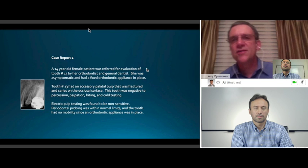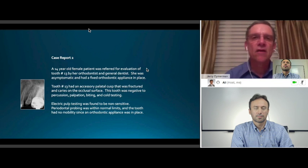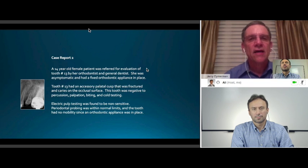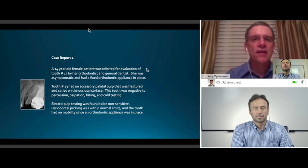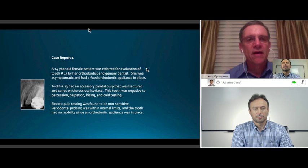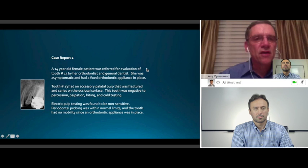We did four cases in this paper. In the first case, we had a 14-year-old female who was referred for evaluation of tooth number 13 by her orthodontist and general dentist. She was asymptomatic, but she had a carious exposure in tooth number 13, which resulted in a non-vital pulp. The root stopped growing at that point. Electric pulp test was negative. It was not sensitive to cold. We knew the tooth was non-vital. Here you see the x-ray on the left. There's a wide canal with an open apex.